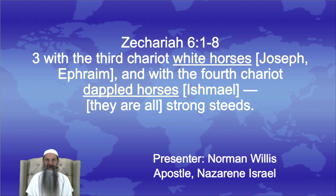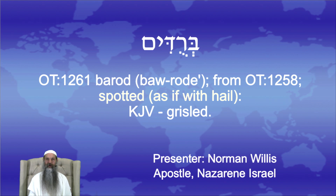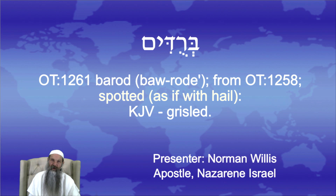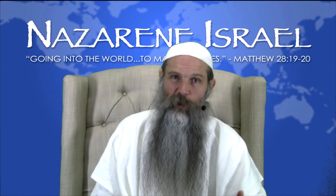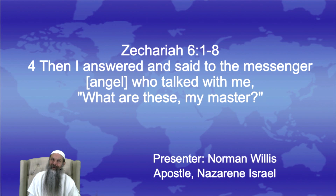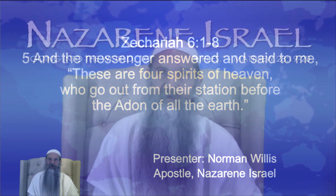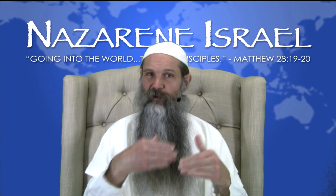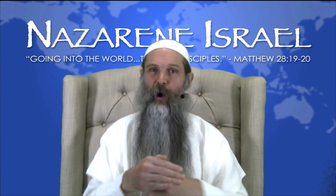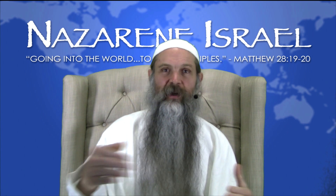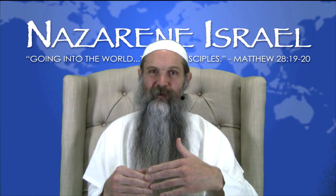The word for dappled is Berudim — Strong's Old Testament 1261, Berod — meaning spotted as if with hail. King James reads grizzled, but we're going to see it is Ishmael, the same group of people. In verse 4, the messenger answered and said to me, 'These are four spirits of heaven who go out from their station before the Adon' — the royalty, meaning the king of all the earth. These four spirits come from Yahweh, and they've gone out, marshalling the forces of earth over thousands of years to get those forces where he wants them for the time of the harvests.